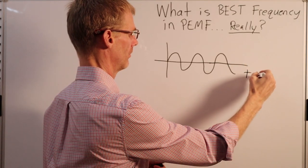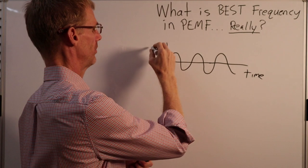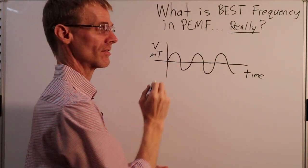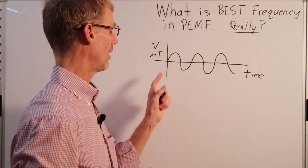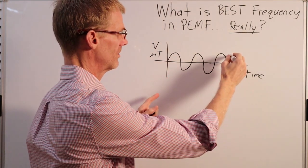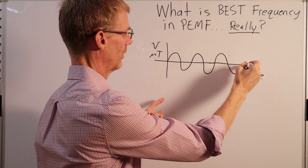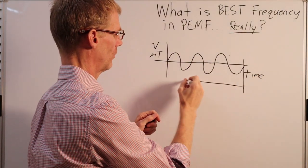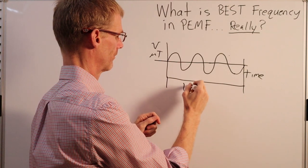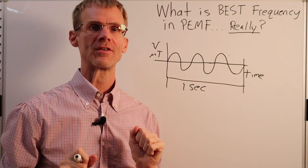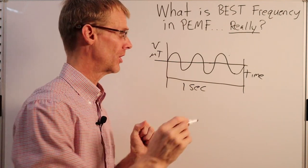It's usually voltage or micro Tesla in PEMF. If this was just one second here, so we got one, two, and then three cycles. If this was one second, see if you can figure out the frequency. If you said three Hertz, you are correct.